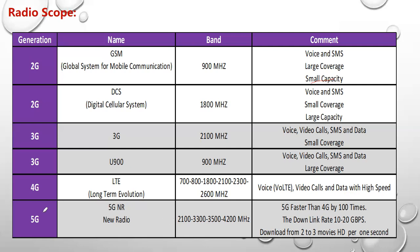There is also 5G. We've heard about 5G a lot but haven't seen a full plan for it yet. 5G is known as 5G NR, short for New Radio, and came with bands of 2,100, 3,300, 3,500, and 4,200 MHz. It is said that 5G is 100 times faster than 4G. The download rate is 10 to 20 gigabits per second, which is unimaginable — you can download two to three HD movies per second.